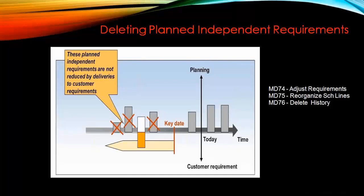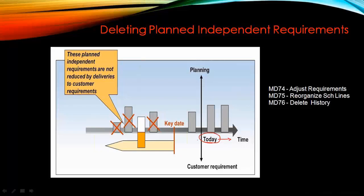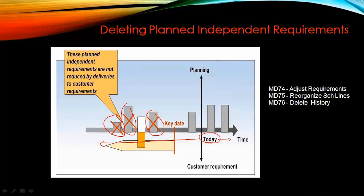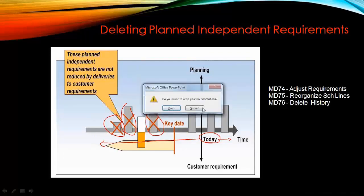Now we'll talk about deleting planned independent requirements. In earlier exercises we saw that we can create different planned independent requirements. In a real-time scenario, in the past we may have created many PIRs that were never consumed — the MD61 records were created but never consumed. So ultimately we need to clear the database. To clear them, we have transactions MD74, MD75, and MD76. MD74 is the main transaction to delete past unused records. Every company runs this report monthly or every two months to clean up what is not used.